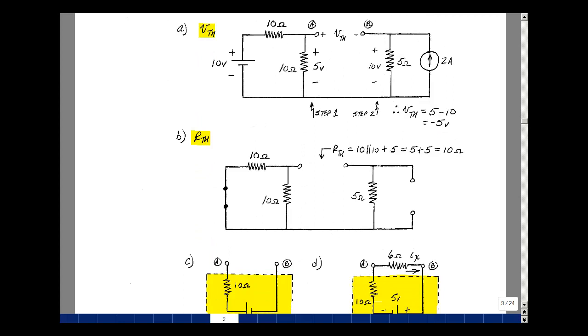The second step of Thevenin's theorem is to set all the independent sources equal to zero. So we're going to short the 10 volt source, open the 2 amp current source.